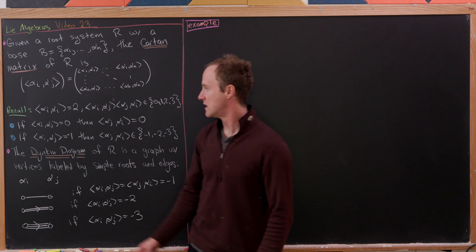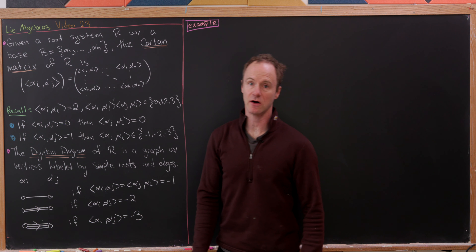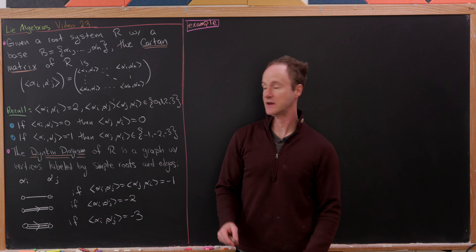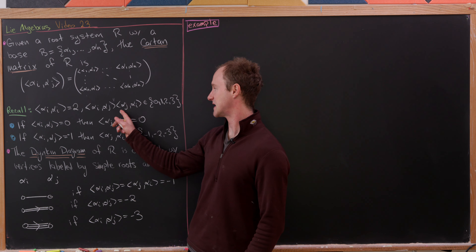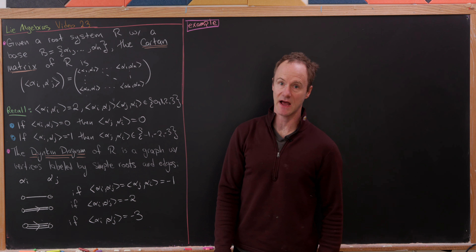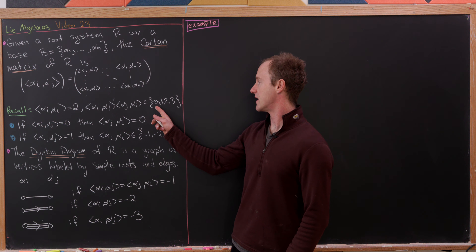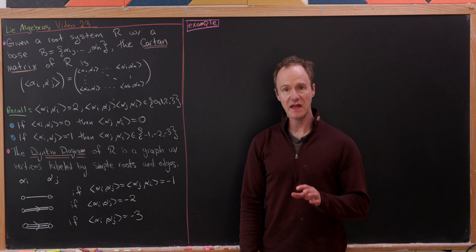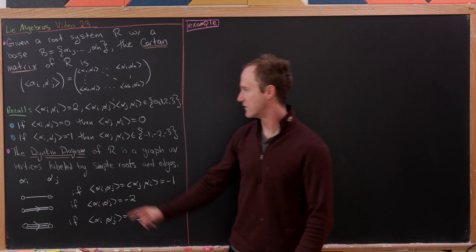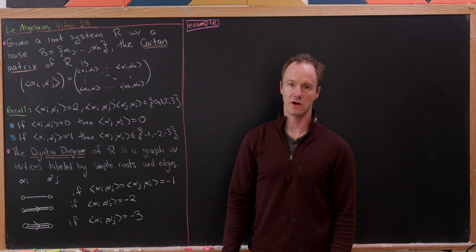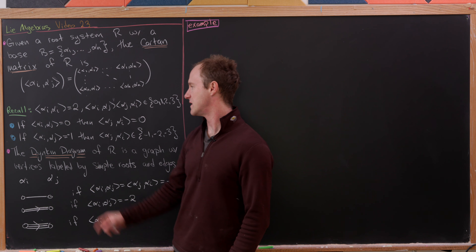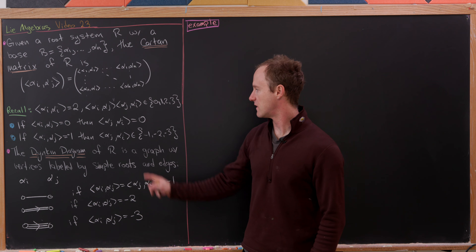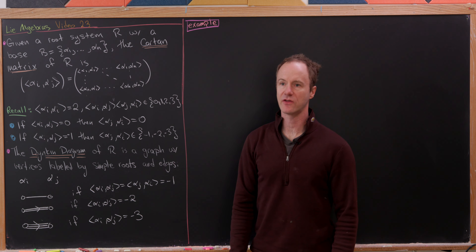Let's also recall that alpha i with itself — that bilinear form — is equal to 2. That's actually true for any root, not just the simple roots. And then we also know that alpha i, alpha j times alpha j, alpha i is either 0, 1, 2, or 3. We proved that a while ago. And if one of them is equal to 0, the other is equal to 0. And if one of them is negative 1, then the other one is negative 1, negative 2, or negative 3.